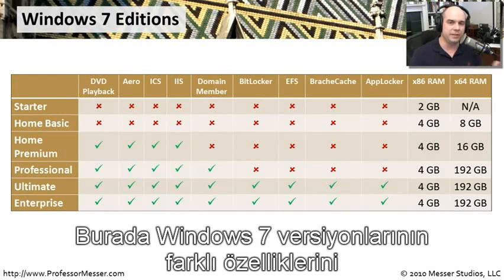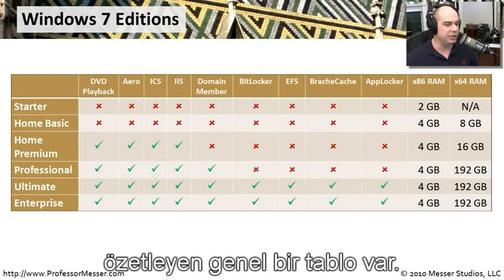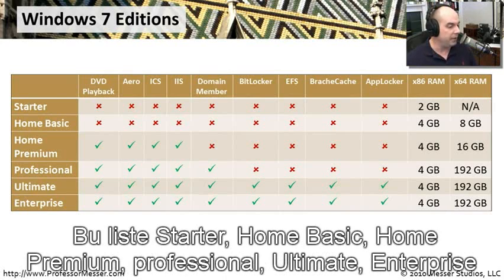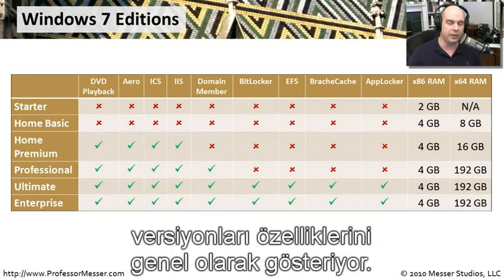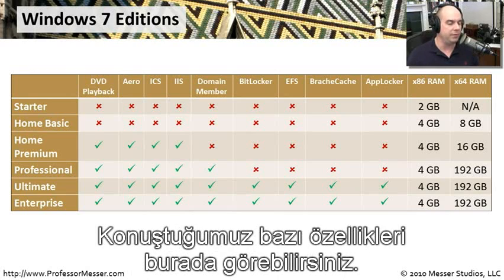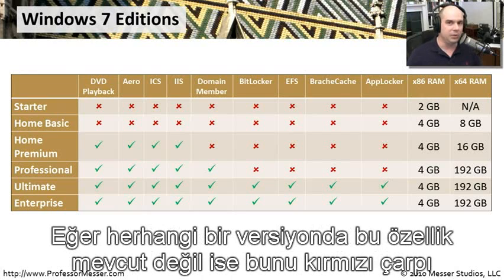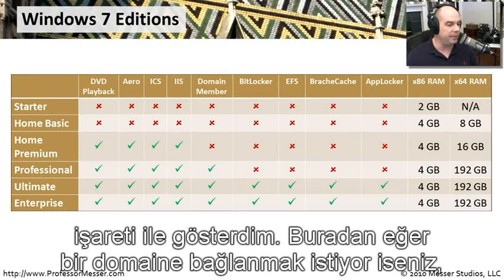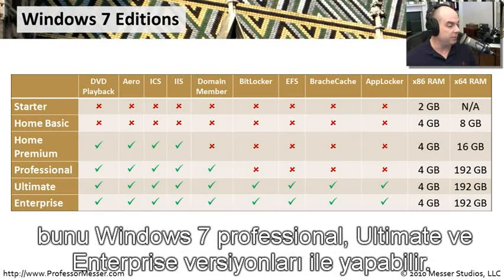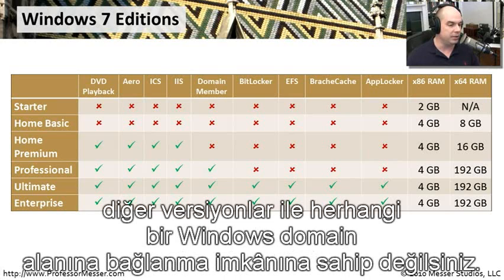Here's a summary of all the Windows 7 editions: Starter, Home Basic, Home Premium, Professional, Ultimate, and Enterprise. Capabilities are shown with a green check mark if available and a red X if not. For example, connecting to a domain is only possible with Windows 7 Professional, Windows 7 Ultimate, and Windows 7 Enterprise — no other versions allow you to join a Windows domain.